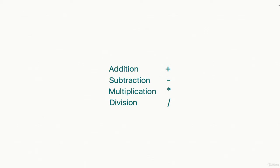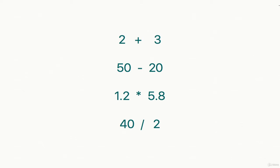All operations like addition, subtraction, multiplication, and division can be performed on numbers. For multiplication, we use the asterisk sign. Numbers can be added like 2 plus 3, subtracted like 50 minus 20, multiplied using asterisk like 1.2 asterisk 5.8, and divided like 40 divided by 2.